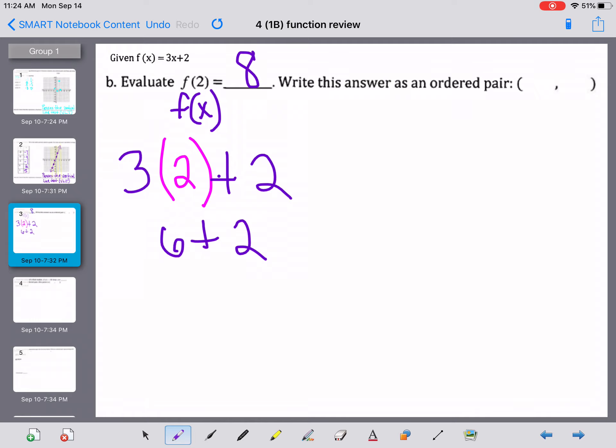And when we figure that out, 3 times 2 is 6 plus 2, so f of 2 equals 8. And then again remember, f of 2, the 2 is the x value, and then what we found when we put the 2 in is we came up with 8.